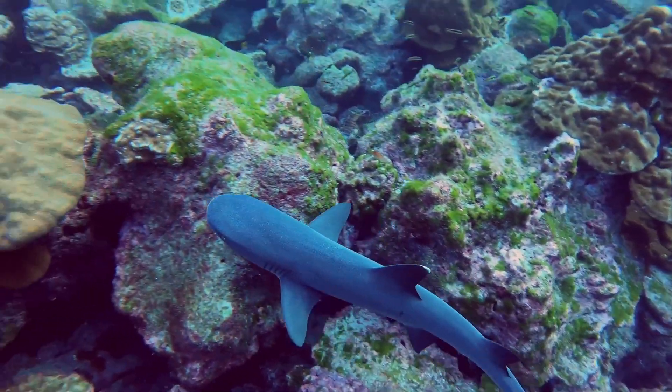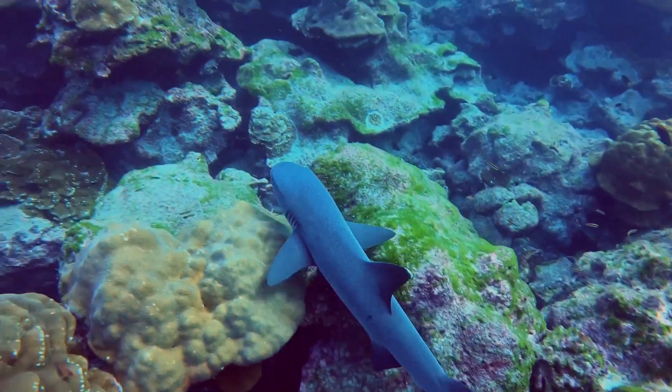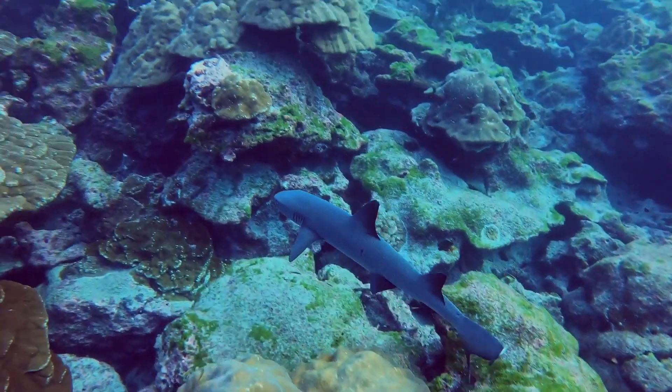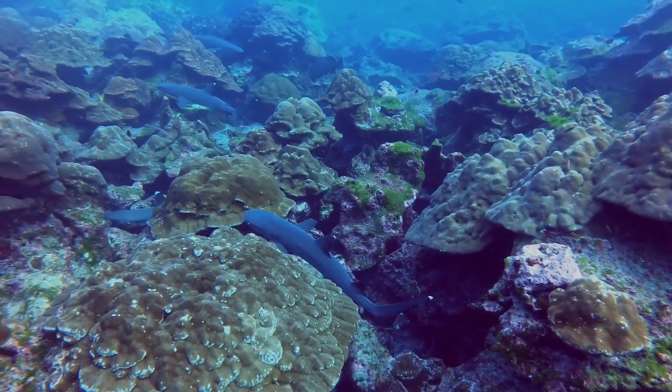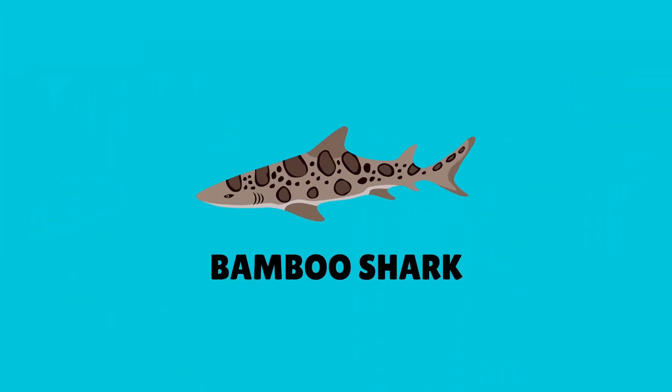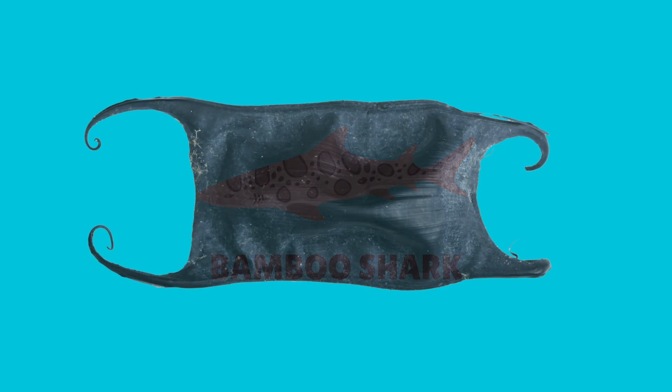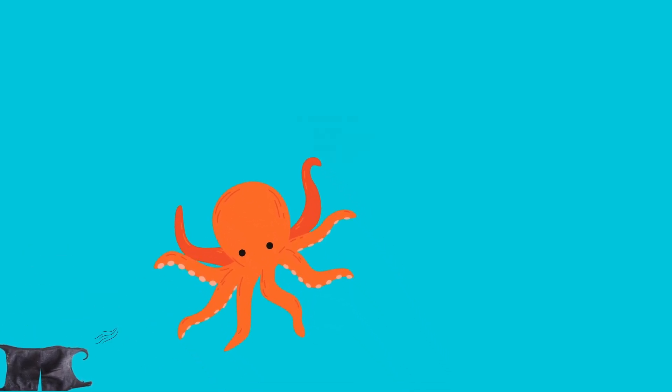Survival in the ocean can be daunting for shark pups. Fortunately, some embryonic sharks can protect themselves from predators, such as the bamboo shark. As these sharks grow in their mermaid's purse, the bottom edge weakens and opens the case. This can be dangerous as predators passing by may get a whiff of the baby shark.